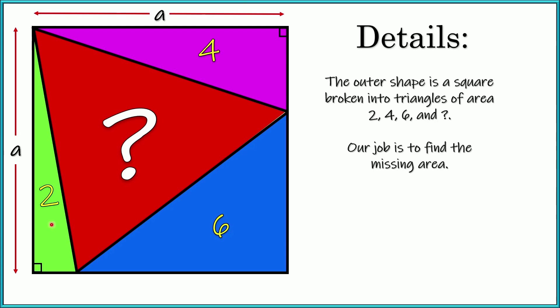Three of them we know. Two, four, and six are the area of the known triangles and our job is to figure out what is the area of this red triangle, the big one right here in the middle. I think this is really appropriate for people just learning how to do these kinds of challenge problems. It only involves some high school level math, but that doesn't make it entirely easy or obvious.